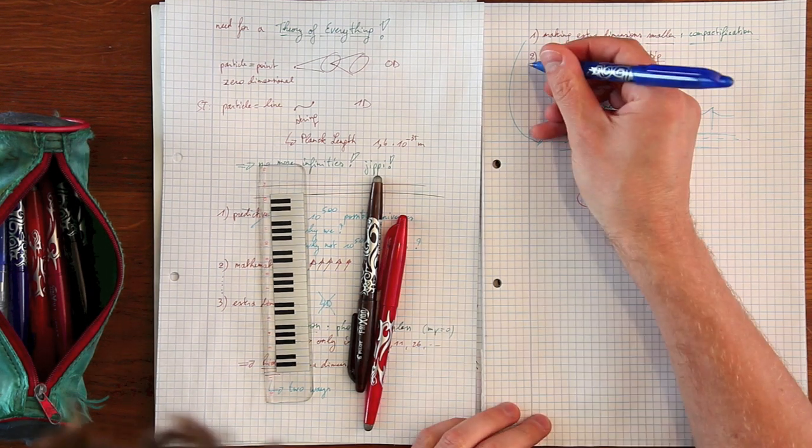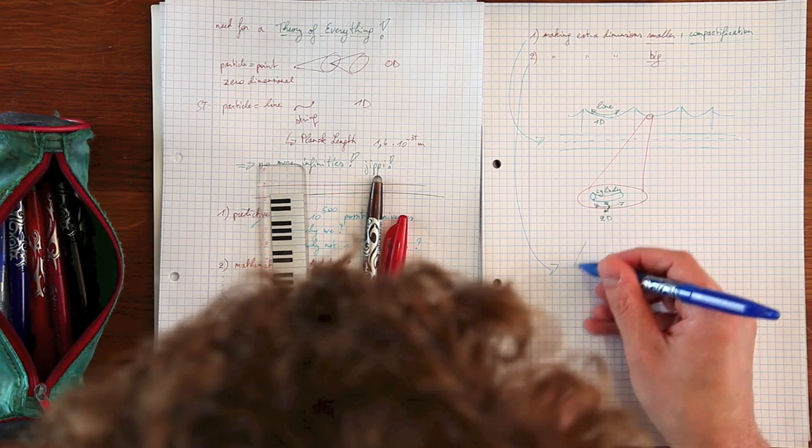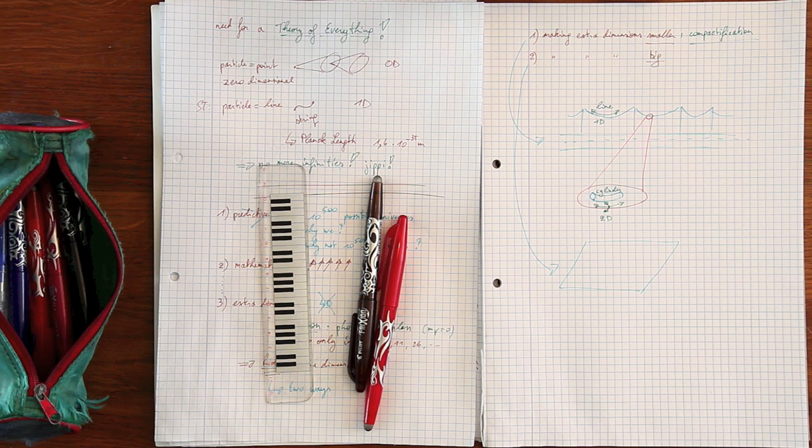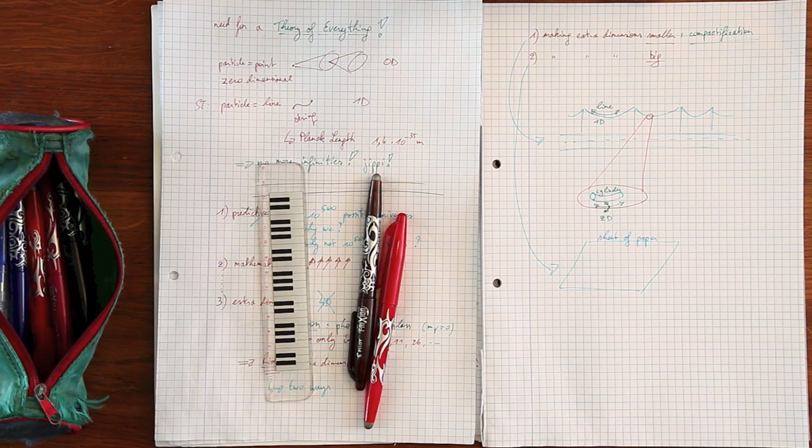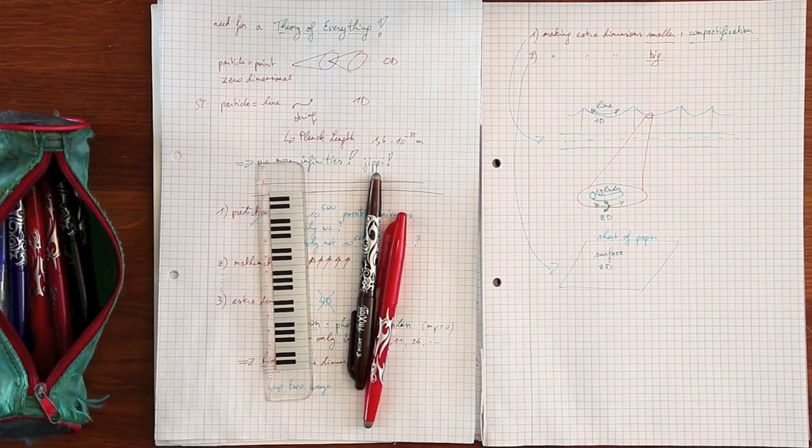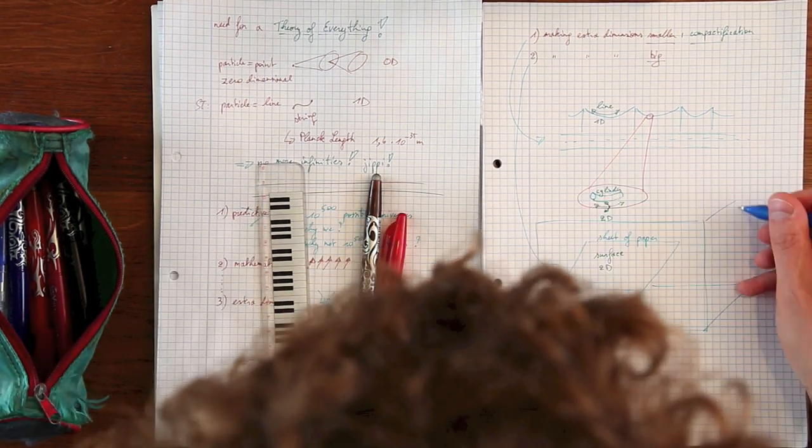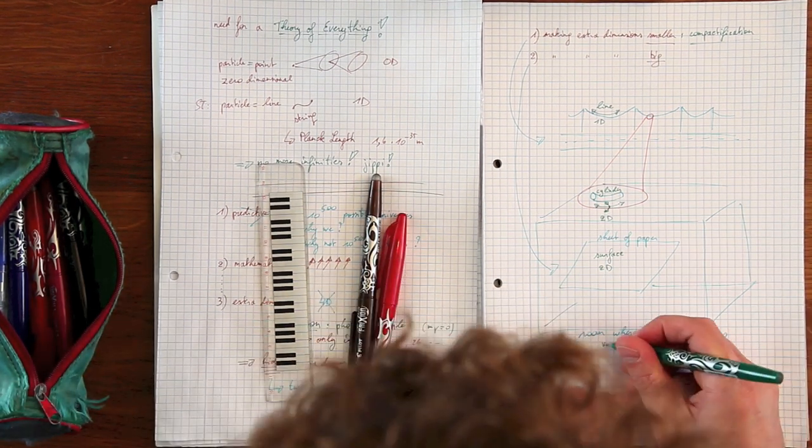On the other hand, dimensions could also be hidden by trapping our universe on a four-dimensional object, we call it a brane, living in a higher dimensional space, called the bulk. It is like the surface of a piece of paper. It is itself two-dimensional, but it can easily live in a three-dimensional world, like a room, the real world in this case.